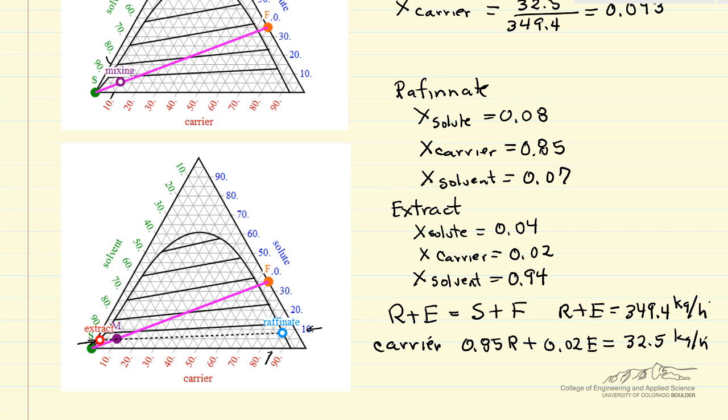And then the solvent, so again I'm doing 0.07, this value, times the raffinate, plus 0.94 times the extract, has to equal the amount of solvent that entered the system, kilograms per hour.